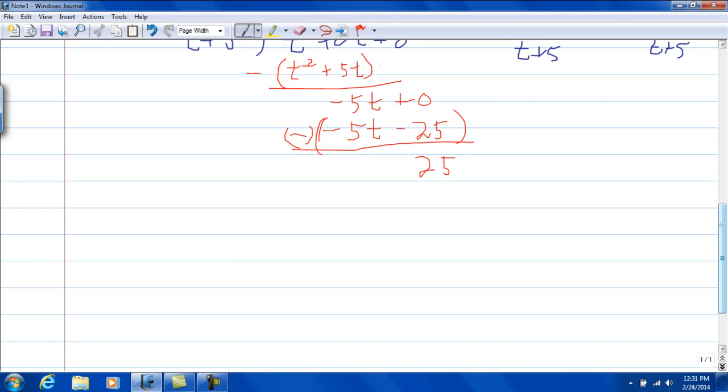So we had t squared over t plus 5, minus 1 half integral of t minus 5 plus 25 over t plus 5 dt.